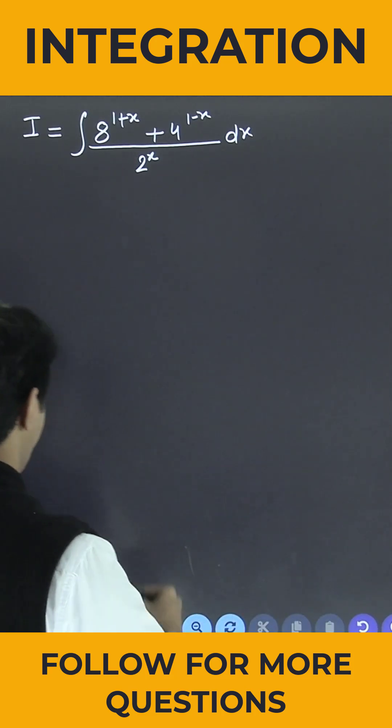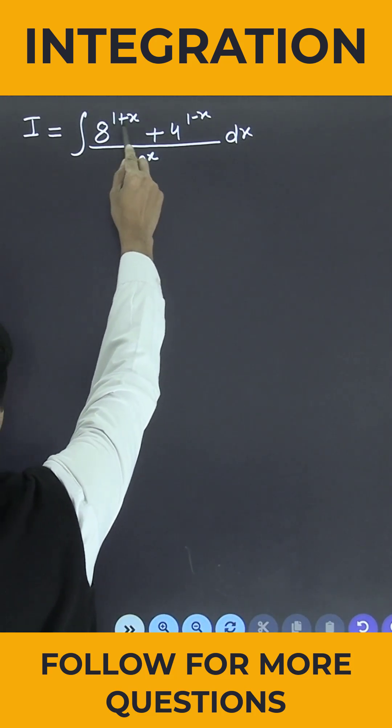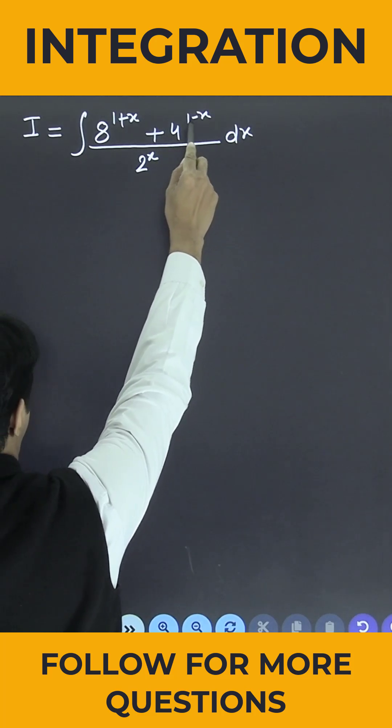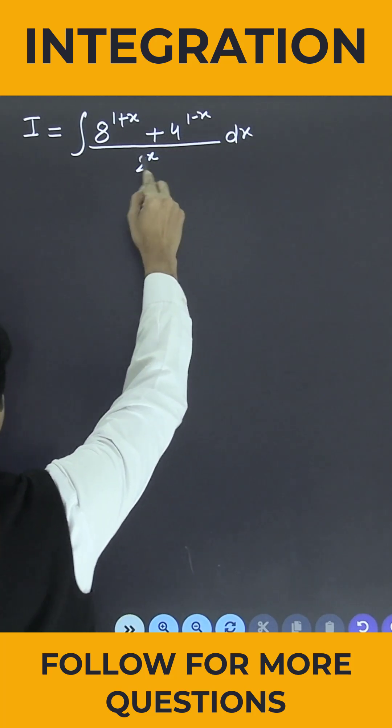One integration is given to us: the integral of 8 to the power 1 plus x, plus 4 to the power 1 minus x, divided by 2 to the power x.